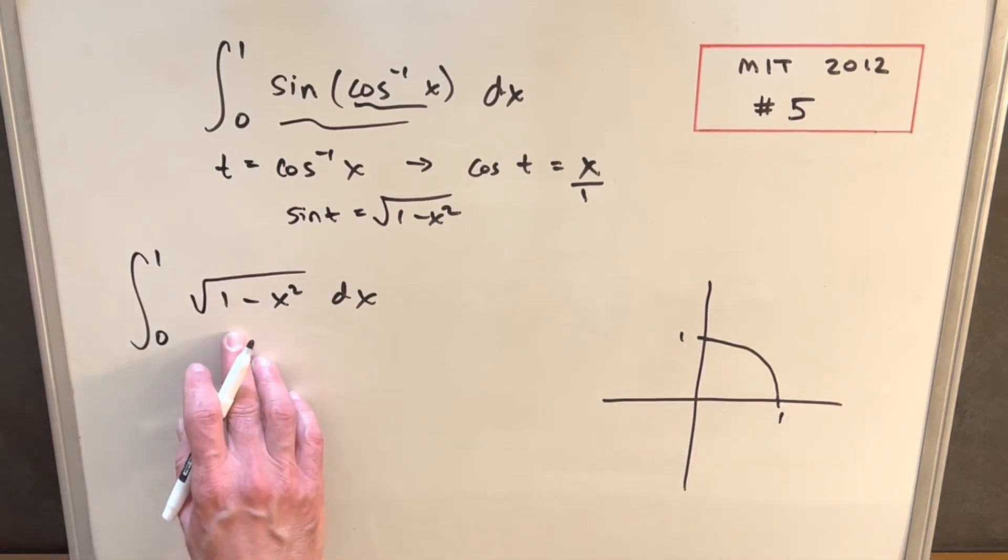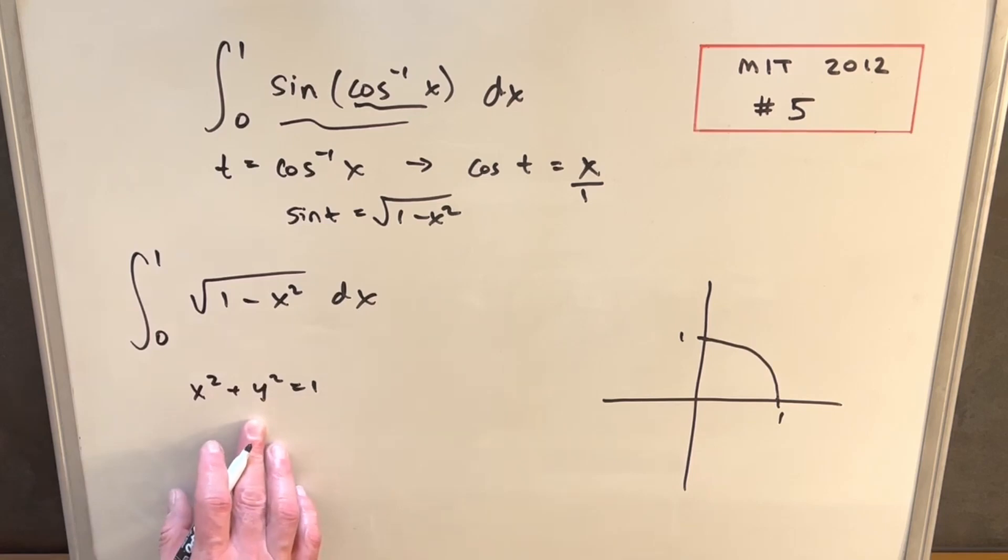You also could think about if you set this equal to y and you square both sides, you get the more familiar form. If you rearrange this, you could get to x squared plus y squared equals 1, maybe the more familiar equation for a circle.